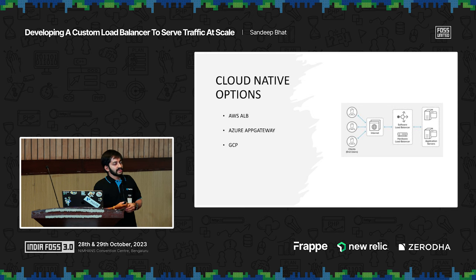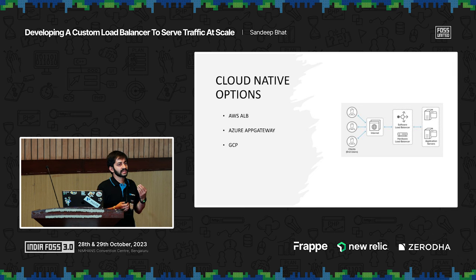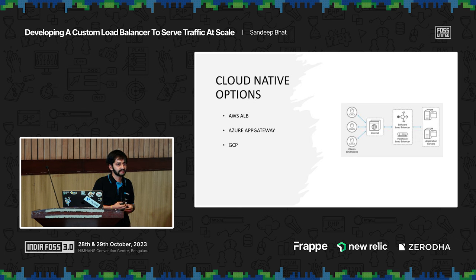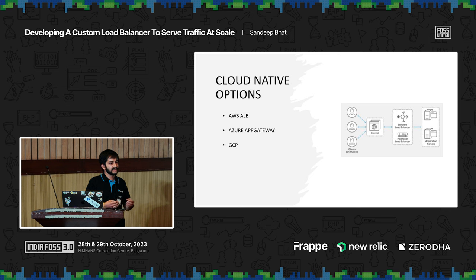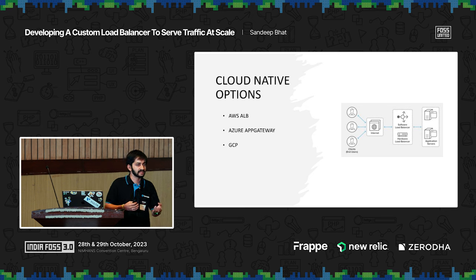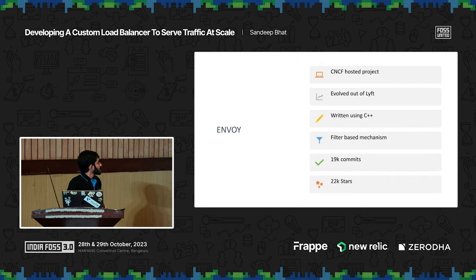Coming back to load balancing — even in the cloud world, what are the options? People would end up talking about AWS ALB, or Azure has its own App Gateway, and GCP has its own offering. Load balancing comes in two ways: HTTP traffic or TCP traffic; we will be mostly focusing on HTTP. From what I have seen, most companies incur huge cloud costs primarily due to RDS or databases, and the second major contributor is ALB traffic and LB usage. This is where we look at coming up with a custom, in-house load balancer solution.